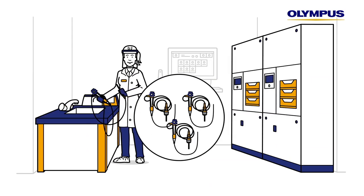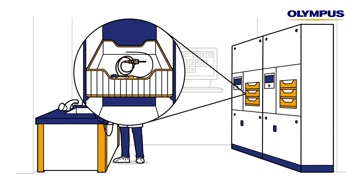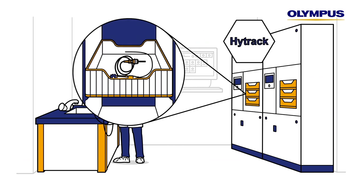The endoscope is then put into the EWD for automated reprocessing. The machine identifies, cleans and disinfects the endoscope and transmits the reprocessing data to HITRAC.